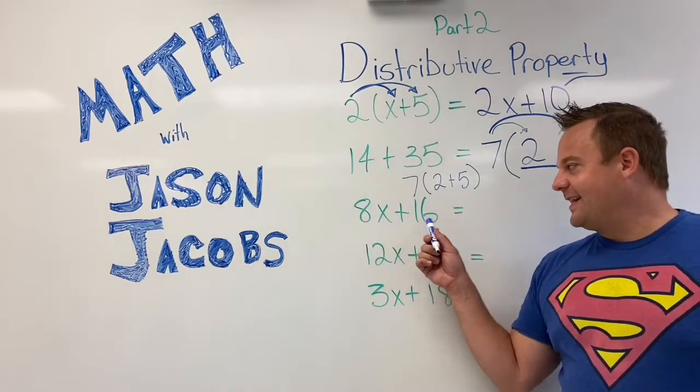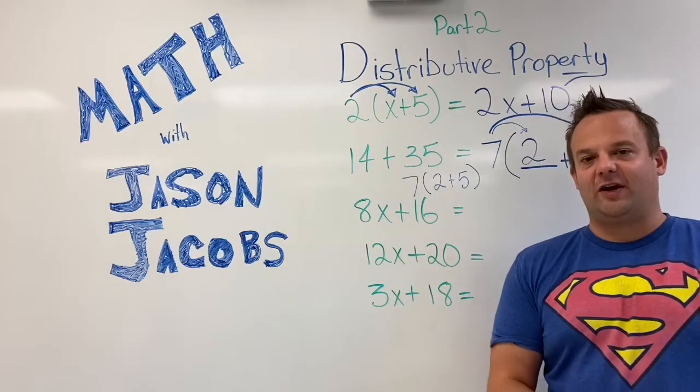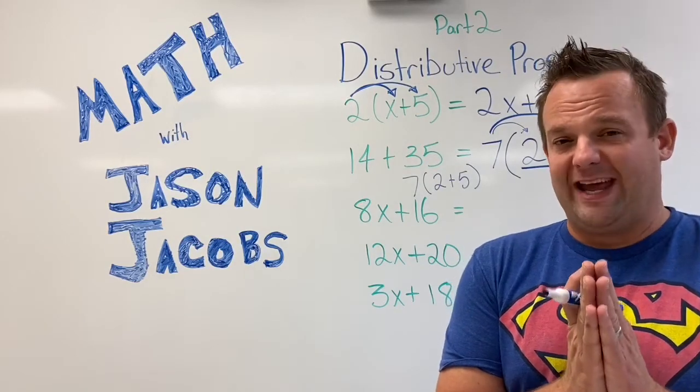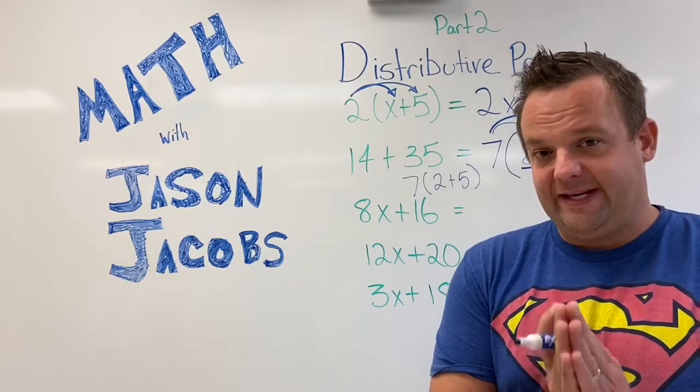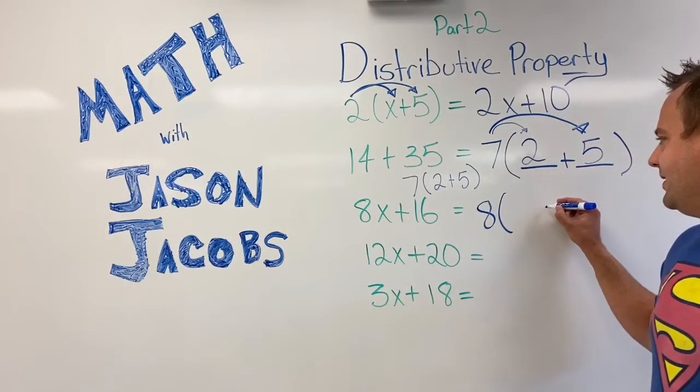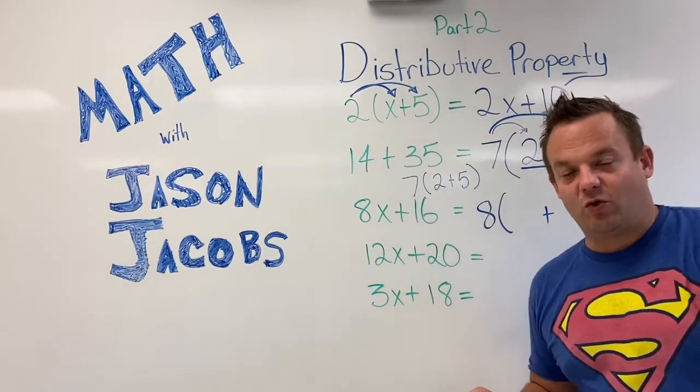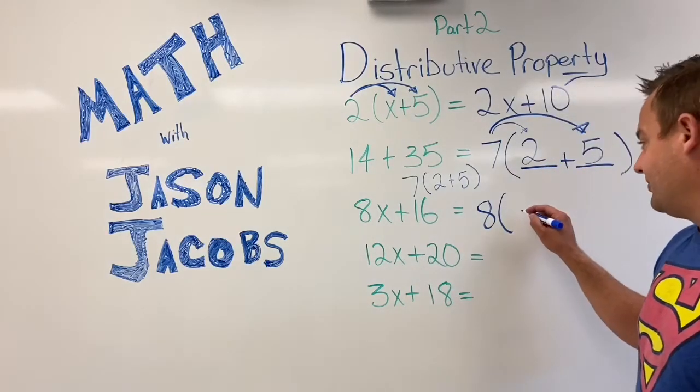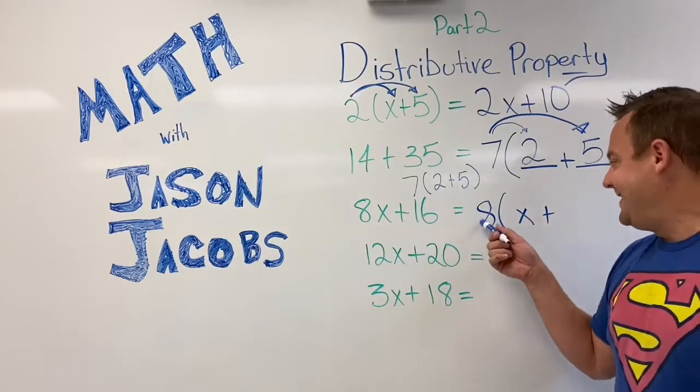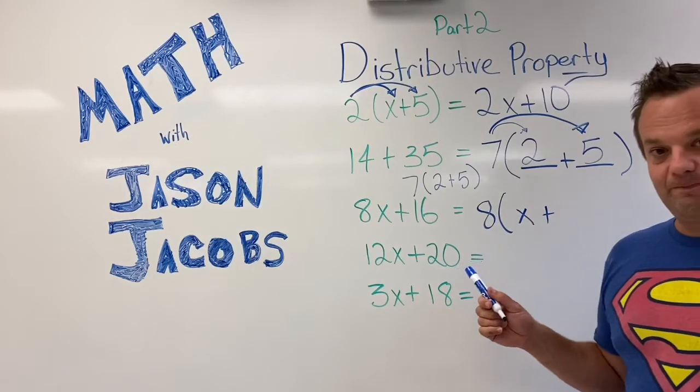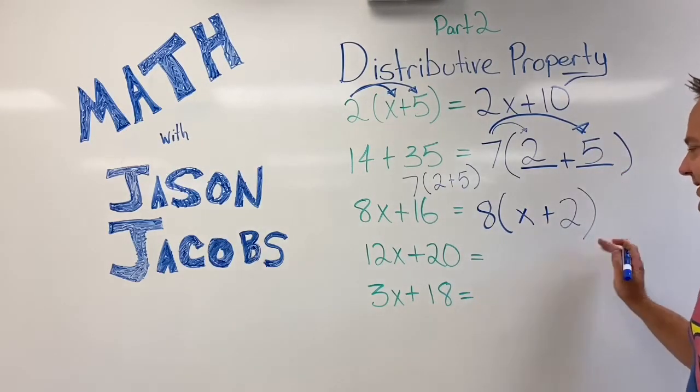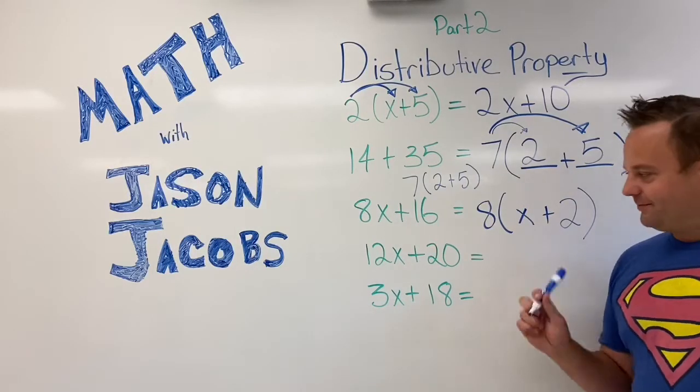Now 8x plus 16. What's the greatest common factor of 8x and 16? What goes into both 8 and 16? 8 does. So we're going to factor out 8. 8 times what equals 8x? That's right. X. Just x. 8 times x is 8x. Plus 8 times what is 16? 8 times 2. You got it. 8 times 2 is 16. So this would be your answer right here.